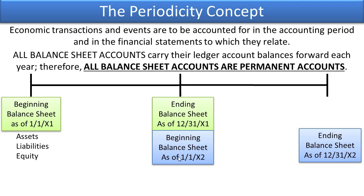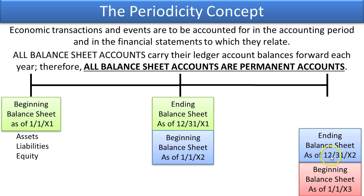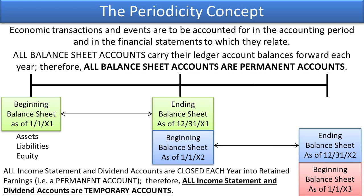It's like when you go to bed at night — if there's a soda pop in the refrigerator on December 31st, when you wake up the next day, the soda pop is still there. Its balance carries forward. The end of X2 will be the beginning of X3. A key cause of change between the beginning and ending balance sheet accounts are all the temporary accounts. All income statement and dividend accounts are closed each year into Retained Earnings, which is a permanent account carried forward on the balance sheet. Therefore, all income statement and dividend accounts are temporary accounts.